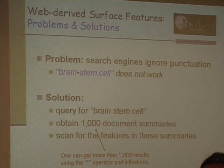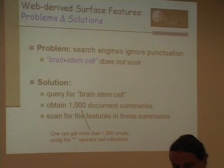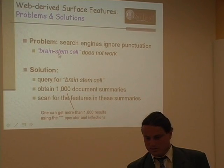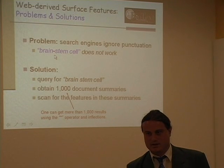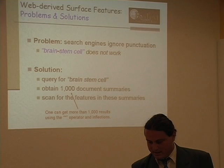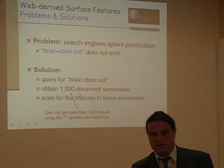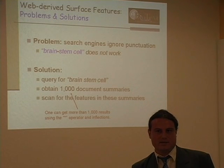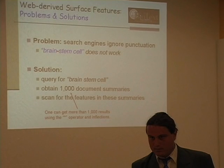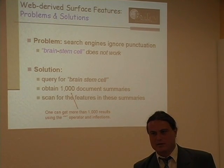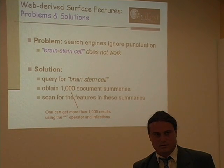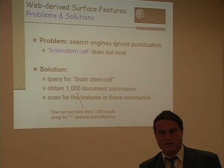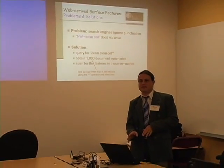The problem is that search engines ignore punctuation, so you can't directly query for a dash in 'brainstem-cell.' Instead, I issue a query for 'brainstem cell,' take the top 1,000 documents, and look in the snippets for the punctuation I'm interested in. Regarding why not use Google n-grams: this work was done in 2005 when they weren't available, and there were also questions about whether punctuation information was included.